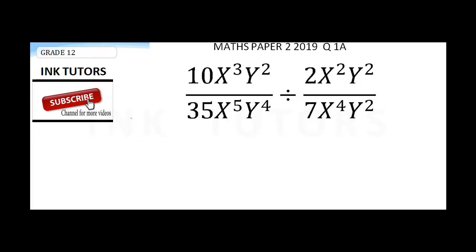All I'll do here is write 10x³y² over 35x⁵y⁴, times 7x⁴y² over 2x²y².